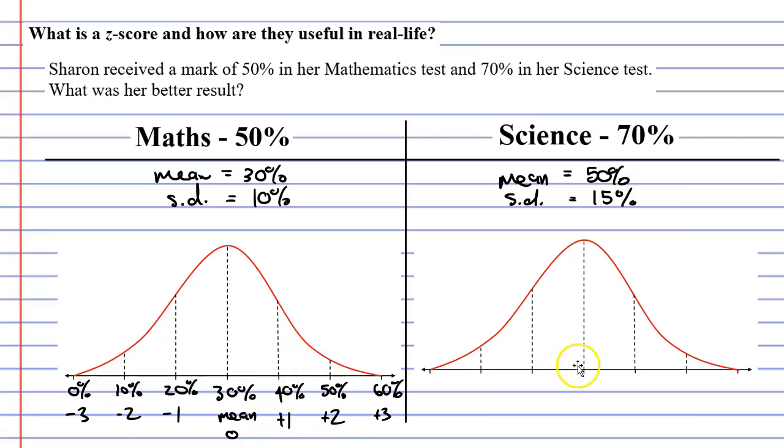And now we need to fill in the science bell curve, remembering that the mean of 50% must be in the middle where the peak of our bell curve is. Now, if our standard deviation is 15%, we're adding 15% each time. So we're going to have 65% with a Z-score of plus 1, 80% with a Z-score of plus 2, and 95% with a Z-score of plus 3.